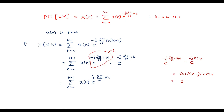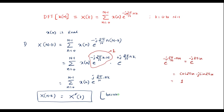Here we can observe that summation n equals 0 to N minus 1 of x of n times e to the power minus j 2 pi by N into n k is nothing but X of k. In our expression, the term is plus j instead of minus j, which means it is the complex conjugate. Therefore, X of N minus k is equal to X star of k. This completes the proof for the first part.